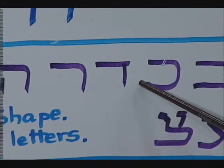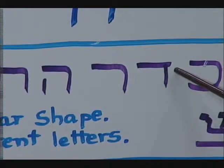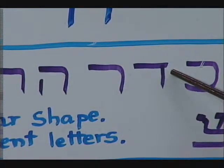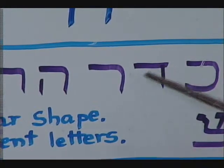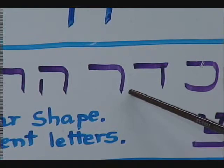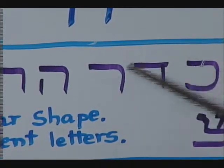The next one is the daled and the resh. It's the same concept that the daled is squared over here exactly where I'm pointing in that corner. It hangs a little bit over if you look carefully. And the resh is nice and rounded over here. That's a big difference between a D and an R sound.